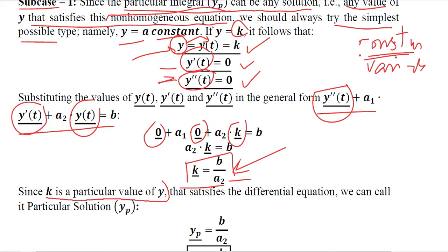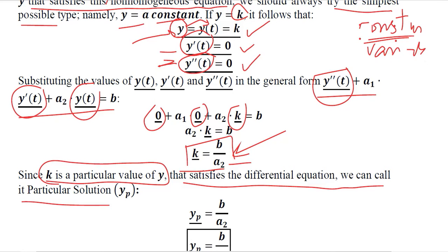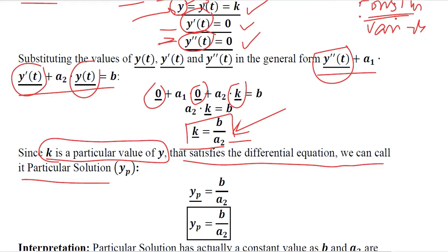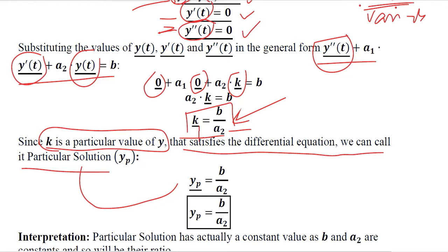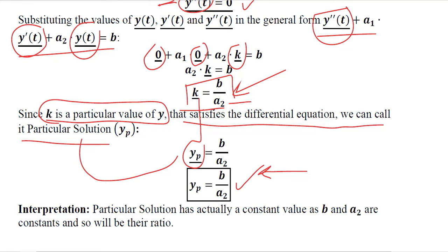K is the particular value of Y that satisfies the differential equation, which is why we call it the particular solution. Since it is the particular solution, instead of writing K we write Yp, the symbol for the particular solution. So we have derived the formula for subcase 1: Yp equals B over A2. This confirms that the particular solution is a constant value equal to the ratio of B and A2.